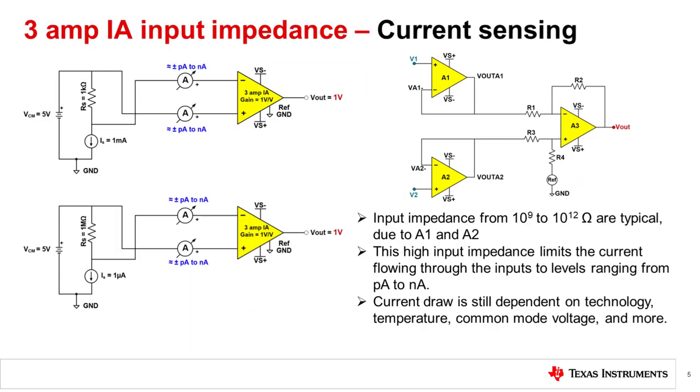We replicated the circuits from the last lecture here, but connected the source to a 3-amp IA. In the top circuit, we have a 1-kiloohm shunt resistor with a 1-milliamp source. We expect and measure 1 volt at the output. In the bottom circuit, we have a 1-megaohm shunt resistor with a 1-microamp source. We again expect and measure 1 volt at the output.